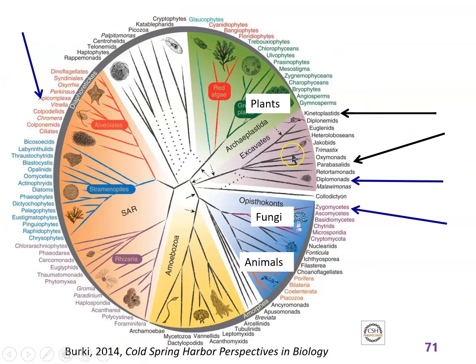This tree covers just eukaryotes and was constructed using more than one gene — not the 16S ribosomal RNA. So this is a more sophisticated way to make a eukaryotic phylogeny. The tree I've been showing you was basically made in the 1970s from 16S ribosomal RNA or from the eukaryotic and archaeal counterparts to that. From the ribosomal RNA we get that plants, fungi, and animals are in one group, but this is a more sophisticated analysis.